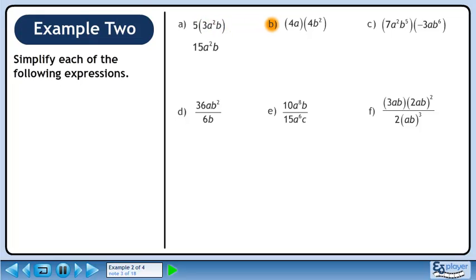Now we'll move on to part b. Multiply the two expressions together to get 16ab squared. No exponent rules are required in this simplification either.